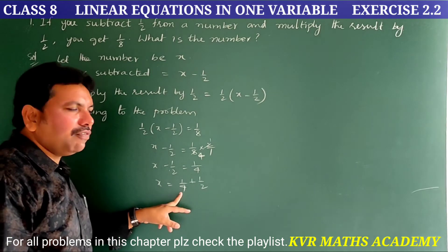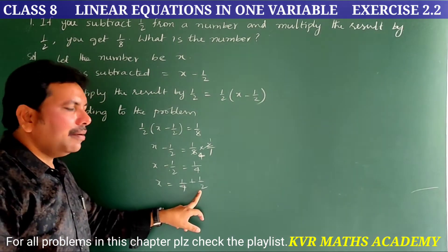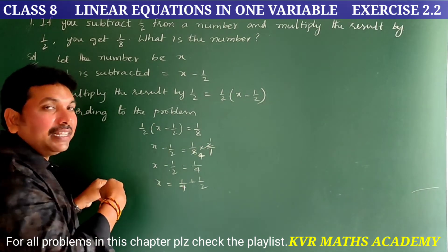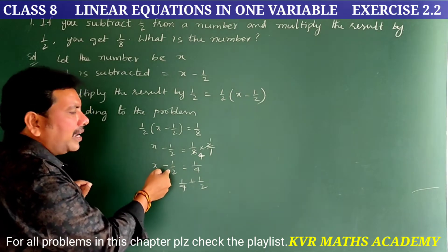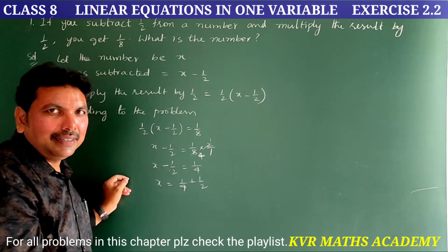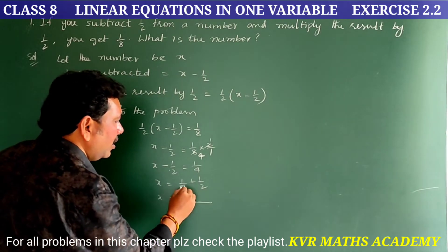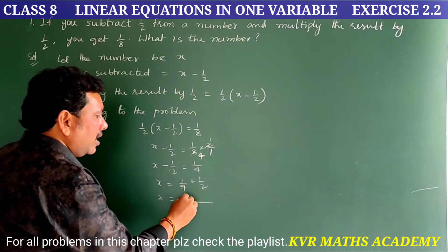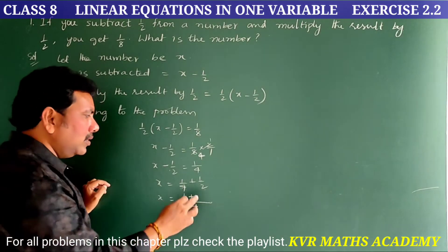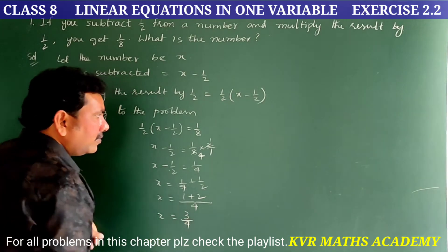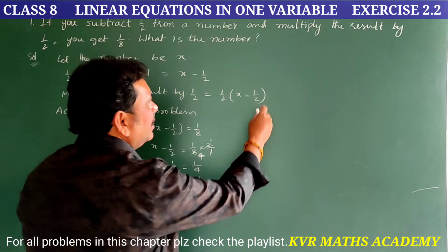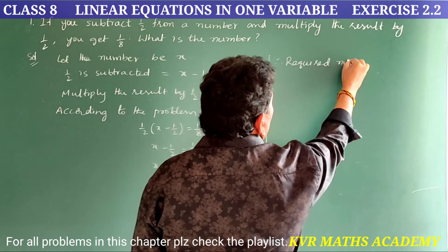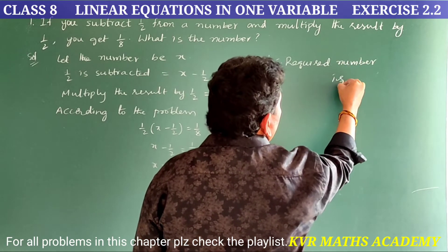Minus 1/2 transfers to this side and becomes plus 1/2. So x = 1/4 + 1/2. The LCM of 4 and 2 is 4: one 1 is 1, plus two 1s are 2, giving x = 3/4. Therefore, the required number is 3/4.